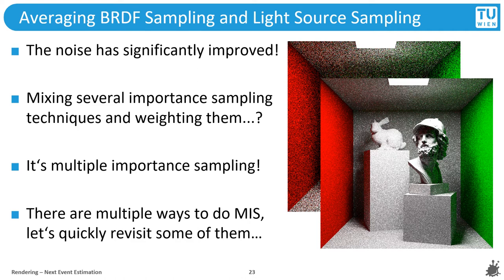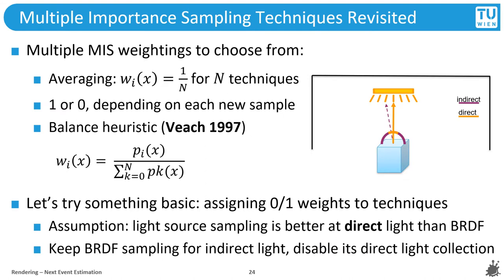Let's quickly recap the MIS methods we have available. The three relevant methods are: averaging, which we just used; one-zero weighting, where we give each technique a weight of one or zero depending on the situation; and lastly the balance heuristic, which Eric Veach suggests is usually a good idea. Let's switch from averaging to using one-zero weights. Right now, we only used averaging to get rid of the double amount of light at each surface point from using both BRDF sampling and light source sampling simultaneously.